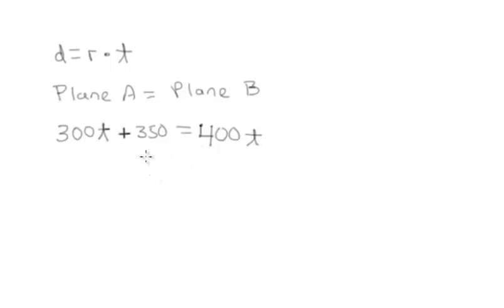So now what we do is we use simple algebra and we put the 300T and the 400T on one side. So that's going to equal 400T minus 300T is 100T is equal, and we bring down the 350. Okay, so now 350 equals 100T. So now we divide 100 into 350 and I can just look at that and determine it's 3.5 is equal to T. So in this case, the answer is 3.5 hours.